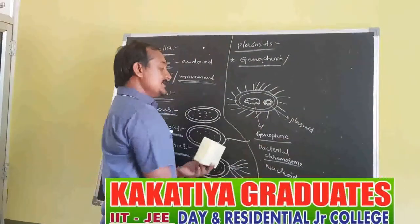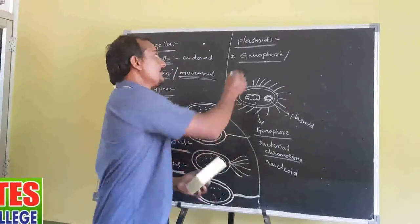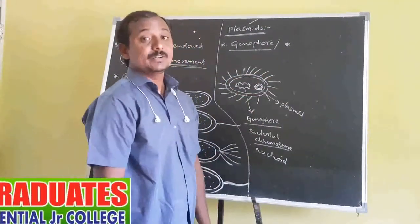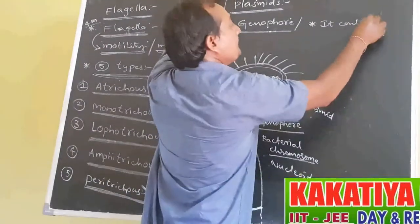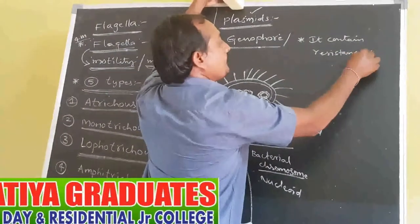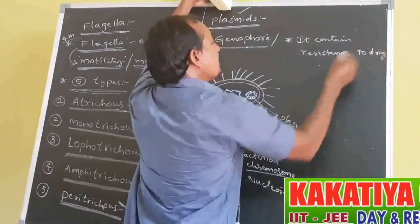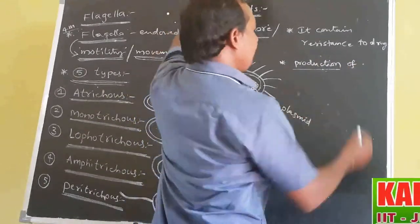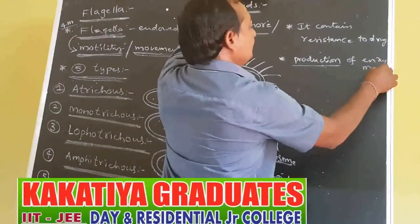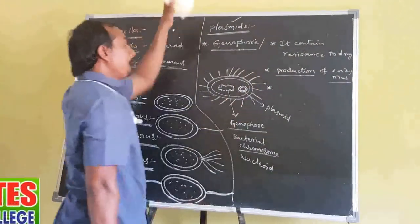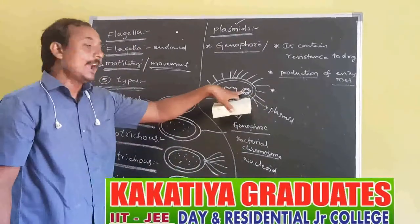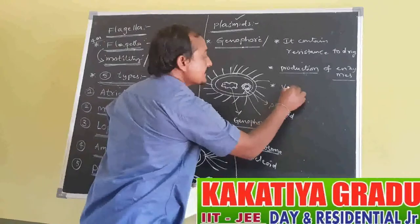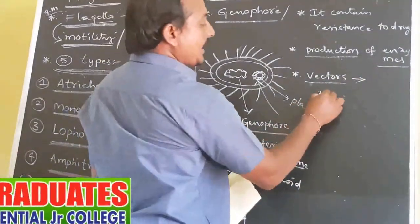Plasmid is the extra genomic material present in the bacterium cell, along with the main genetic material — the Genophore, Bacterial Chromosome, or Nucleoid. Plasmid contains resistance to drugs. Plasmids are easily isolated from the bacterium cell and easily reintroduced into the bacterium cell. Nowadays, Plasmids are used as vectors in modern genetic engineering techniques.